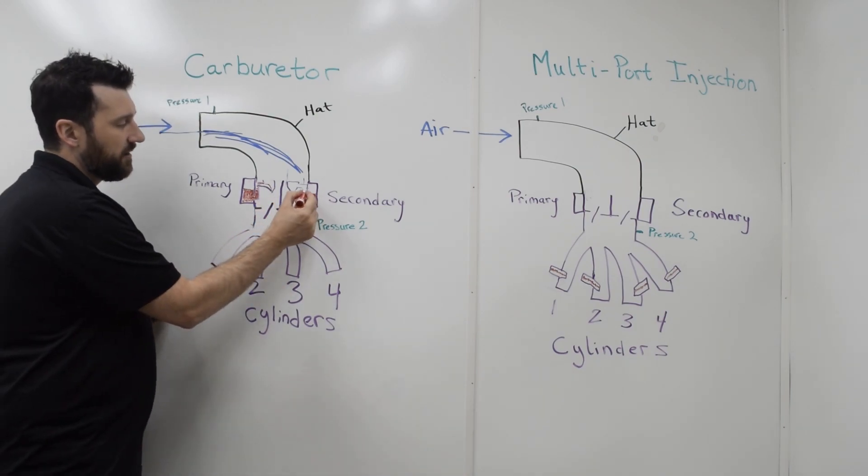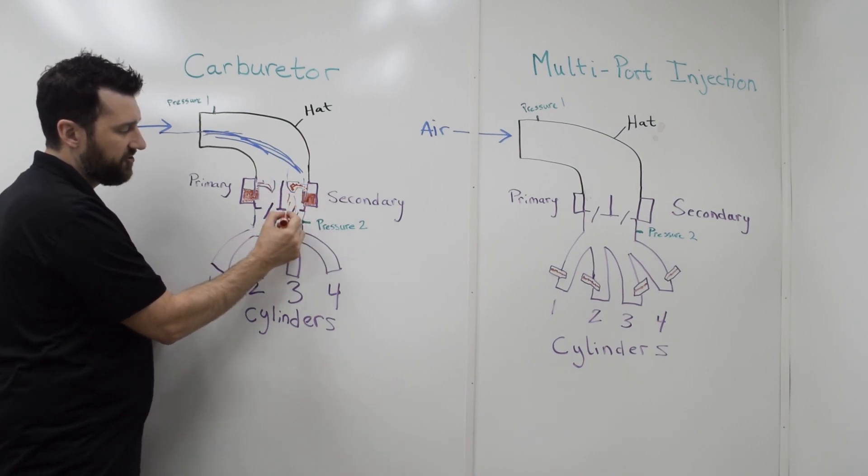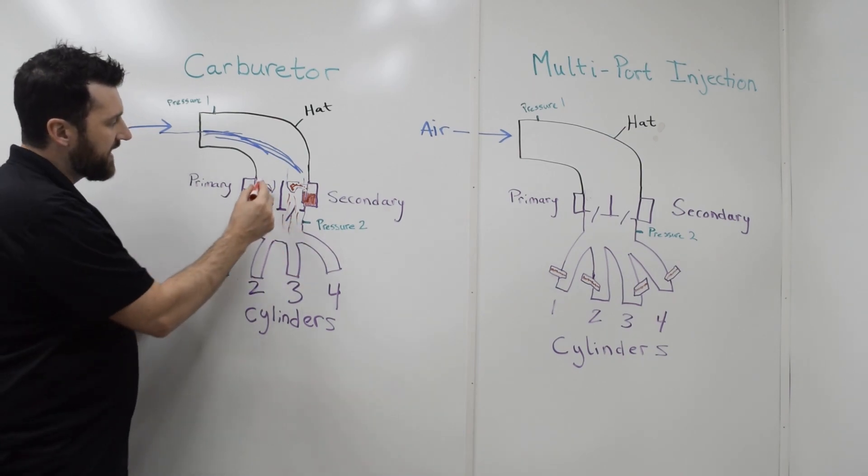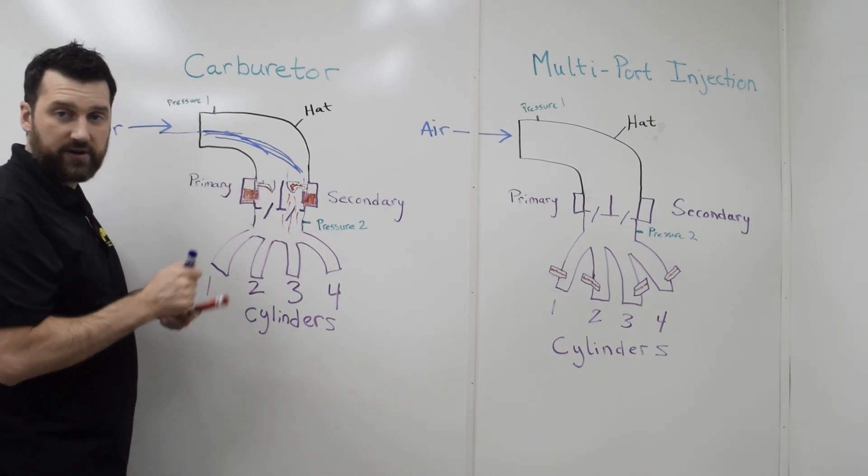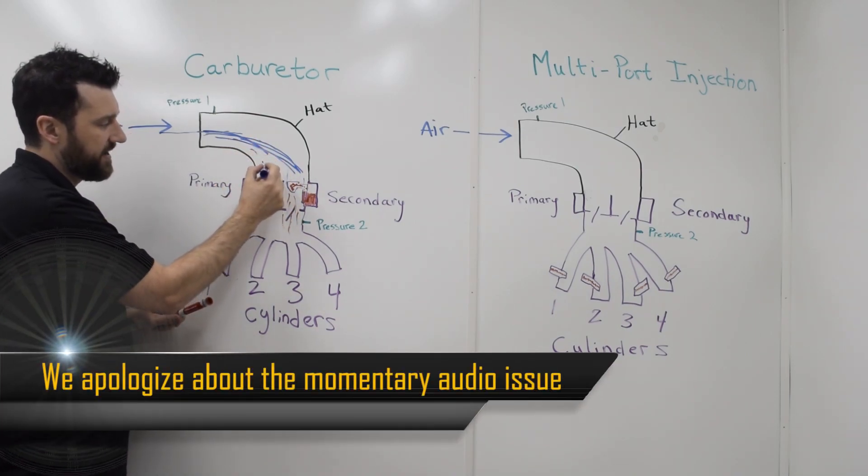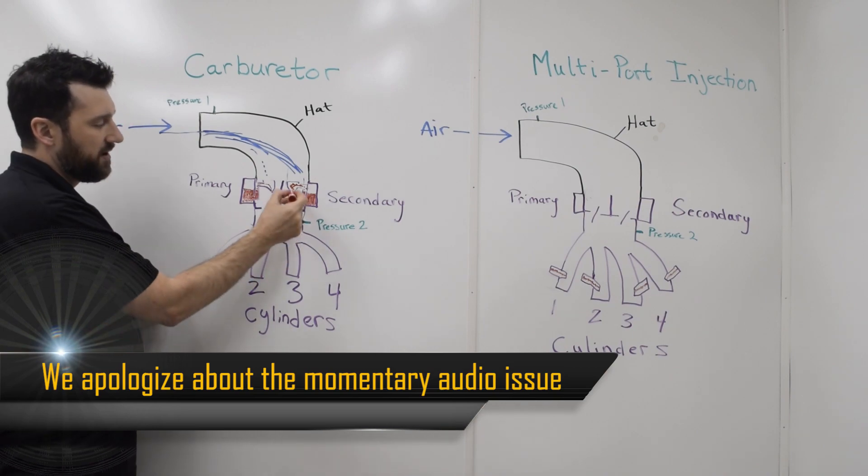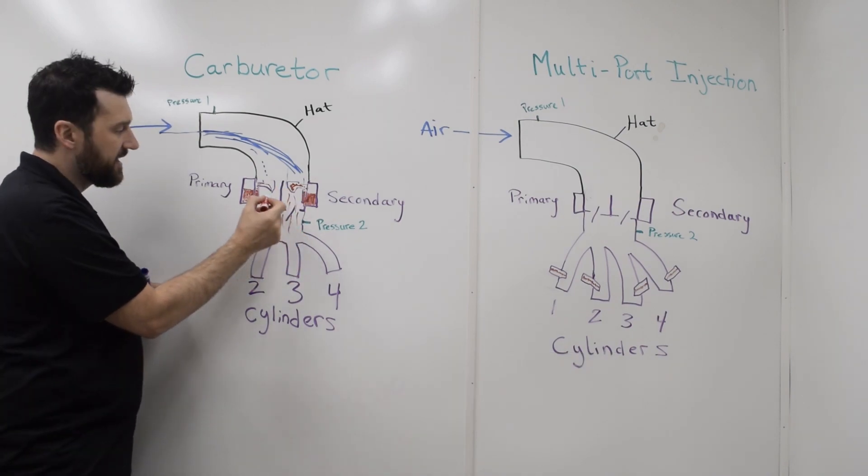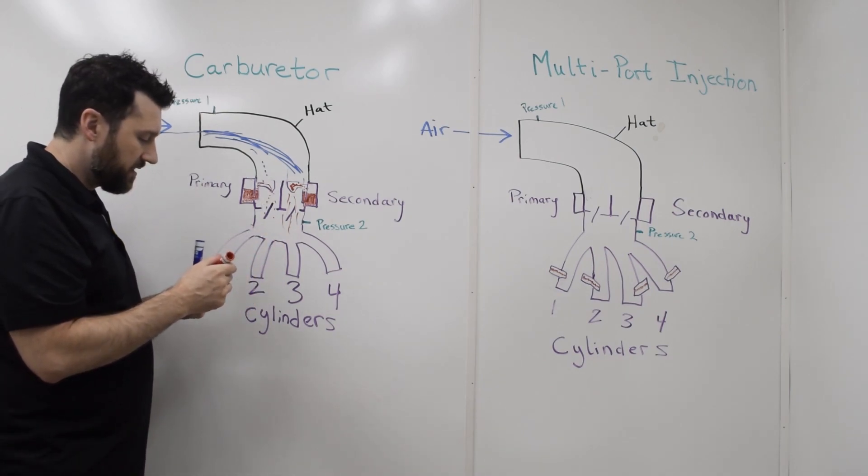What happens is, you get a lot of fuel that builds up from this secondary and pours into the engine. And not as much because the air is tending to go this way rather than straight into this first venturi. So you have a very rich secondary and a quite lean, in comparison, primary.